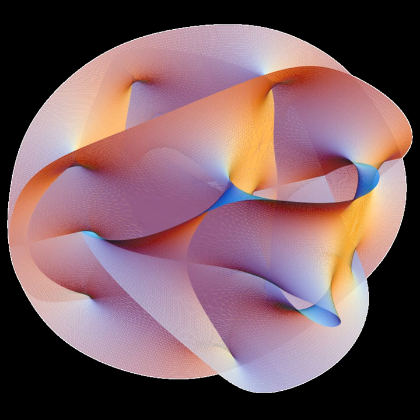There are two kinds of heterotic string: the heterotic SO and the heterotic E8 times E8, abbreviated to HO and HE.